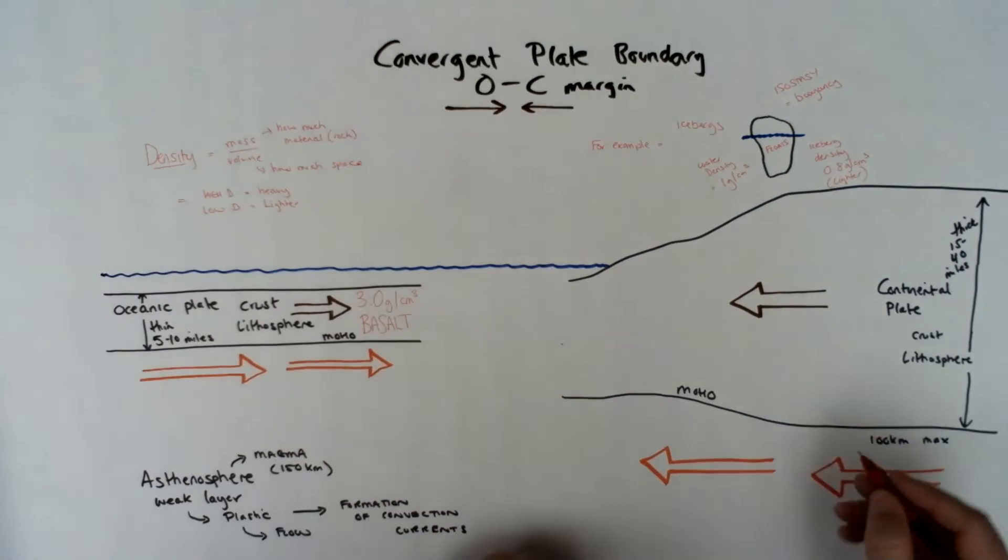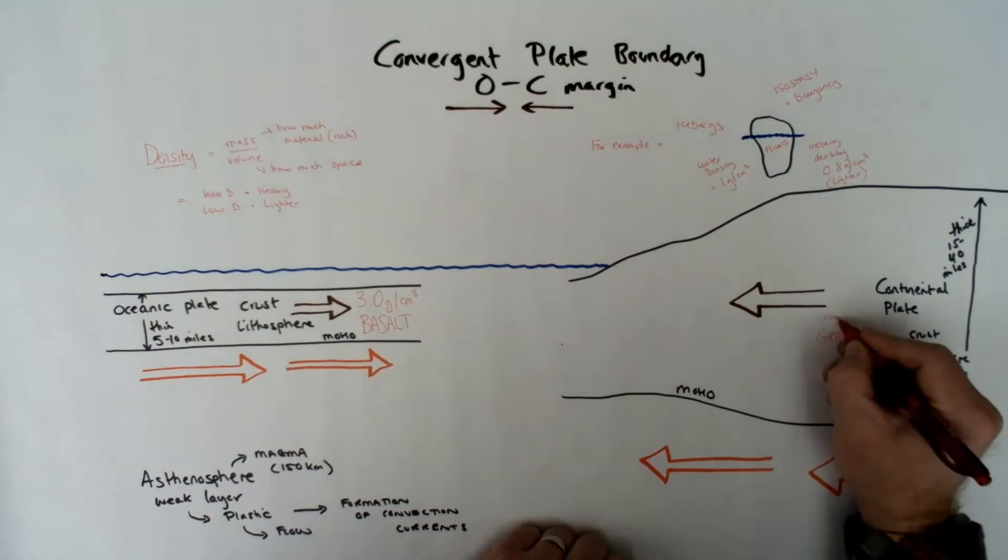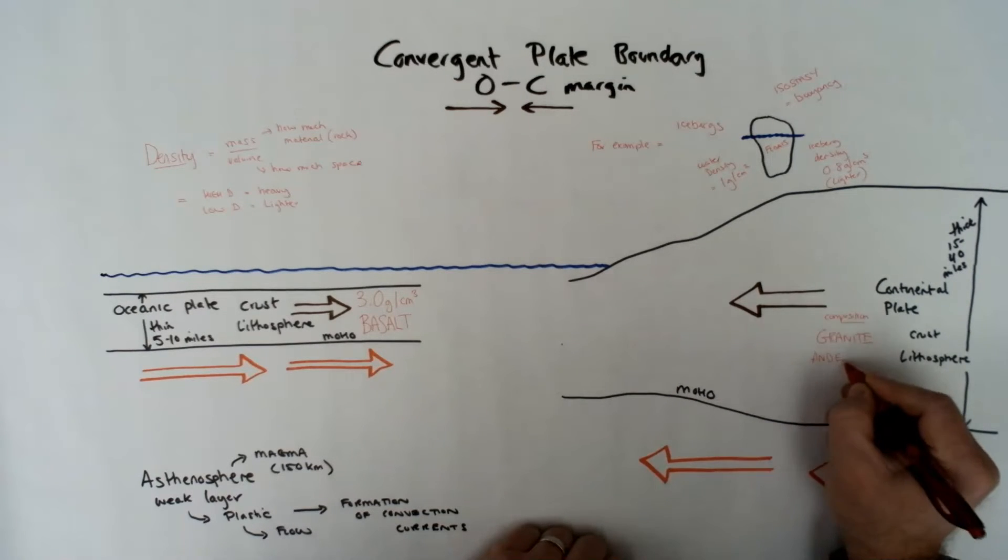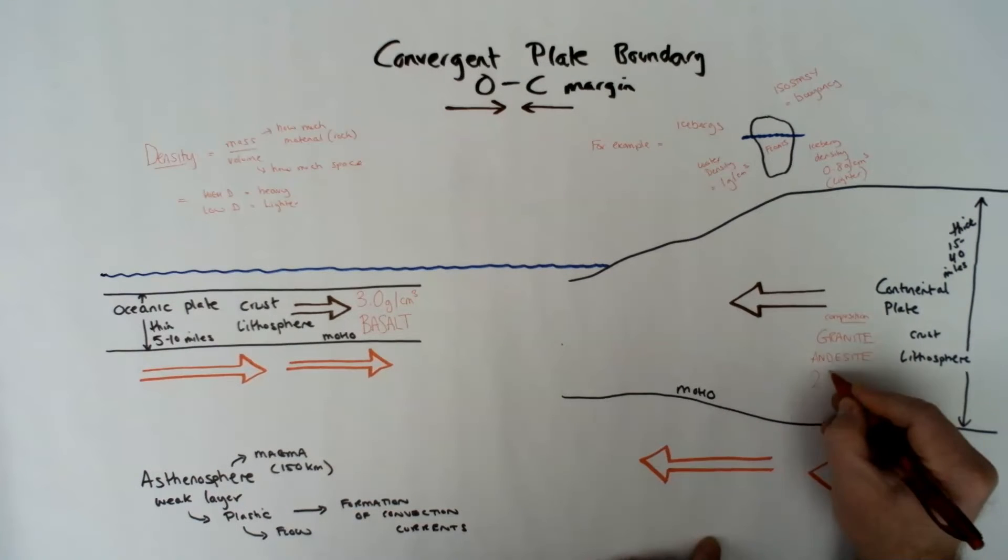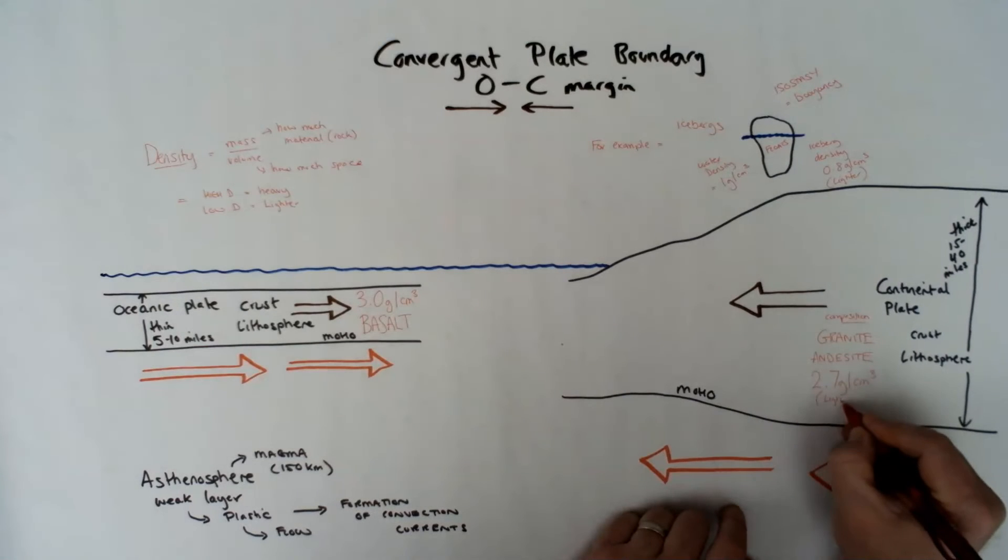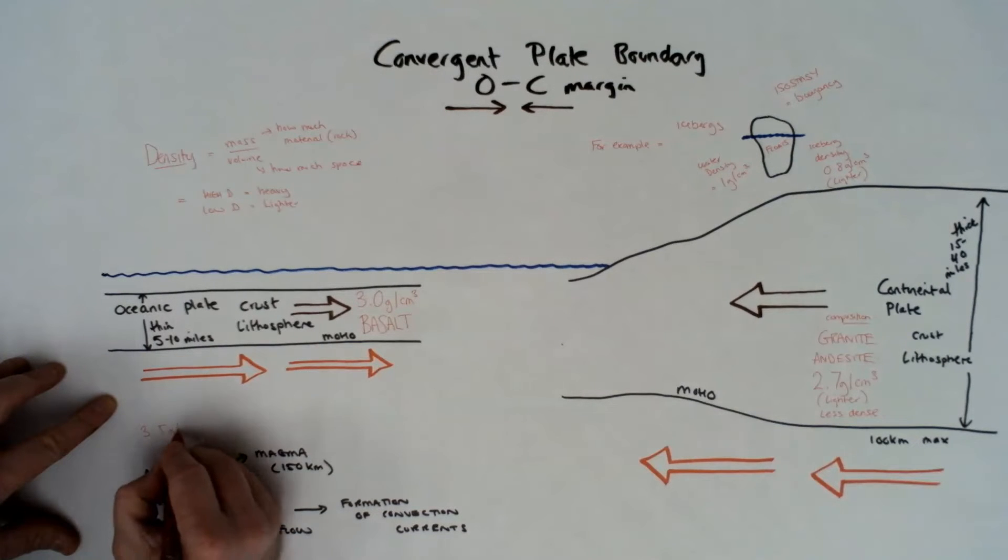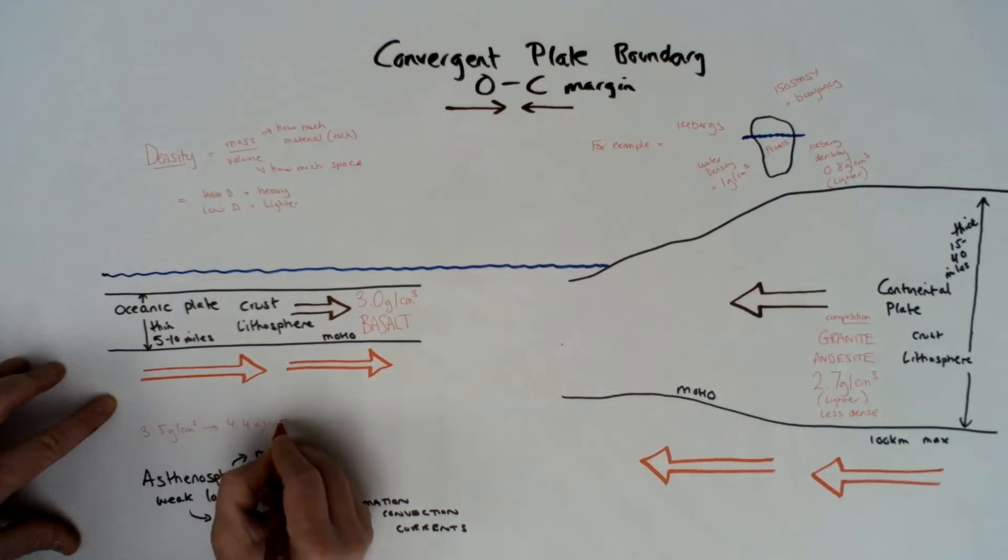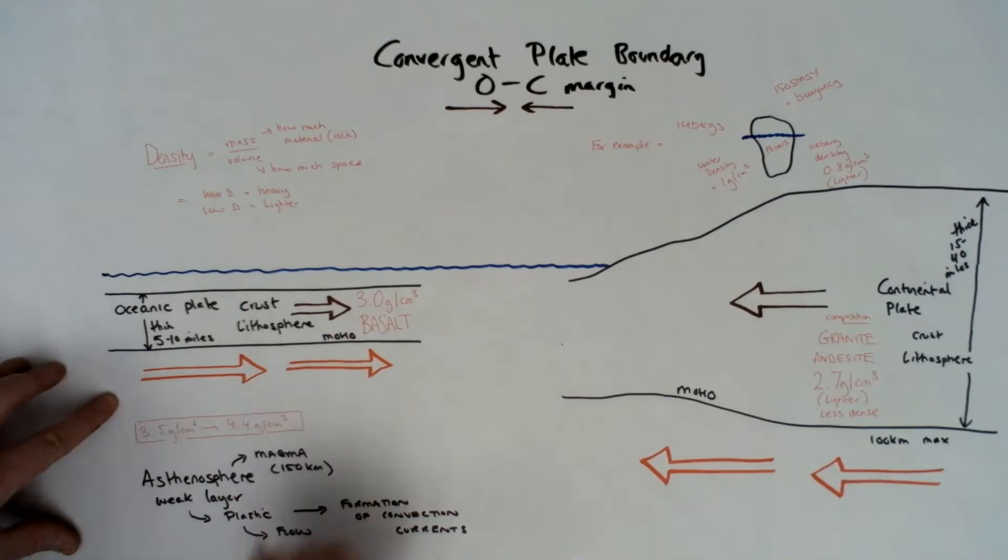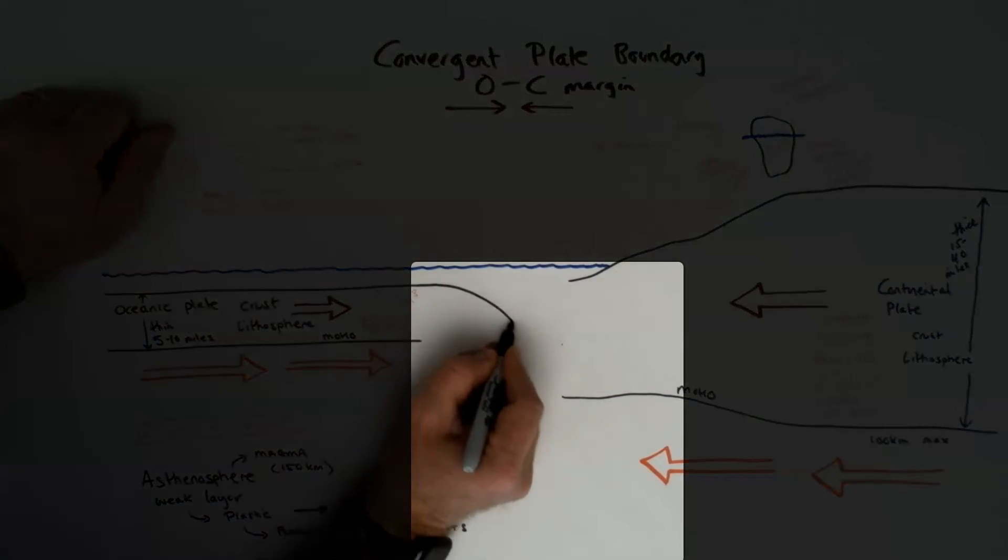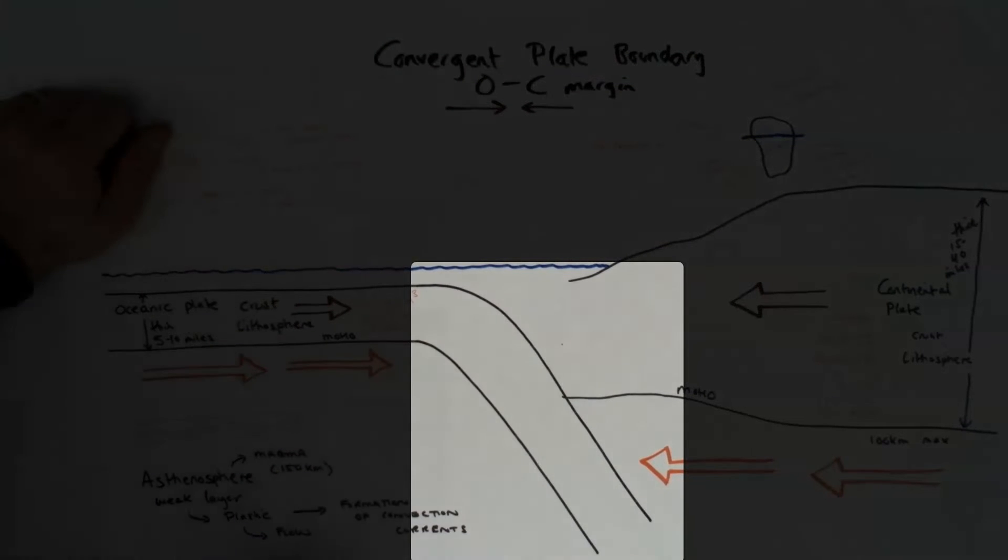Now basalt, which is the main rock of the ocean plate, is three grams per centimeter cubed, and the granite in the continental crust or plate is an average 2.7 grams per centimeter cubed. So that means the oceanic plate is denser than the continental plate. So in terms of collision, what's going to happen is the oceanic plate is gonna be forced under to sink, which is heavier.